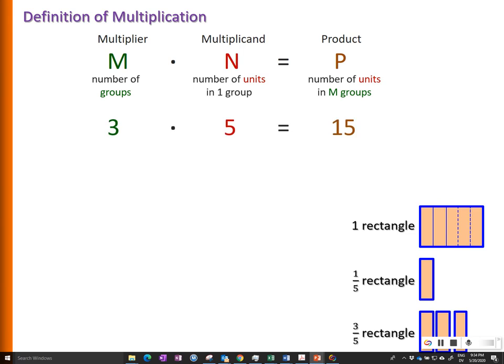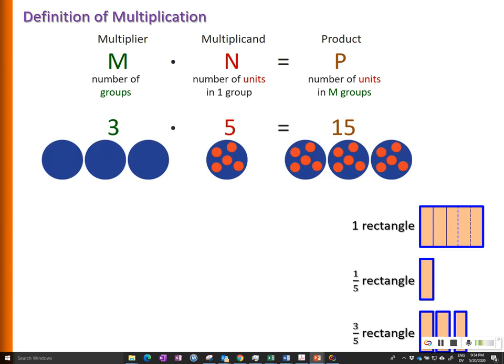For example, three times five equals 15 can be understood as there are three groups and each group has five dots, so there are altogether 15 dots. Now, how is this related to conceptualizing fraction as a product?